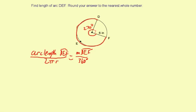And also, just to make it a little easier, I'm going to let x equal the arc length of DEF, so I don't have to keep writing it over and over again. So we'll do x over, and then 2π and r is 6, so 2π times 6 equals the measure of arc DEF, which is 270 degrees to 360 degrees.